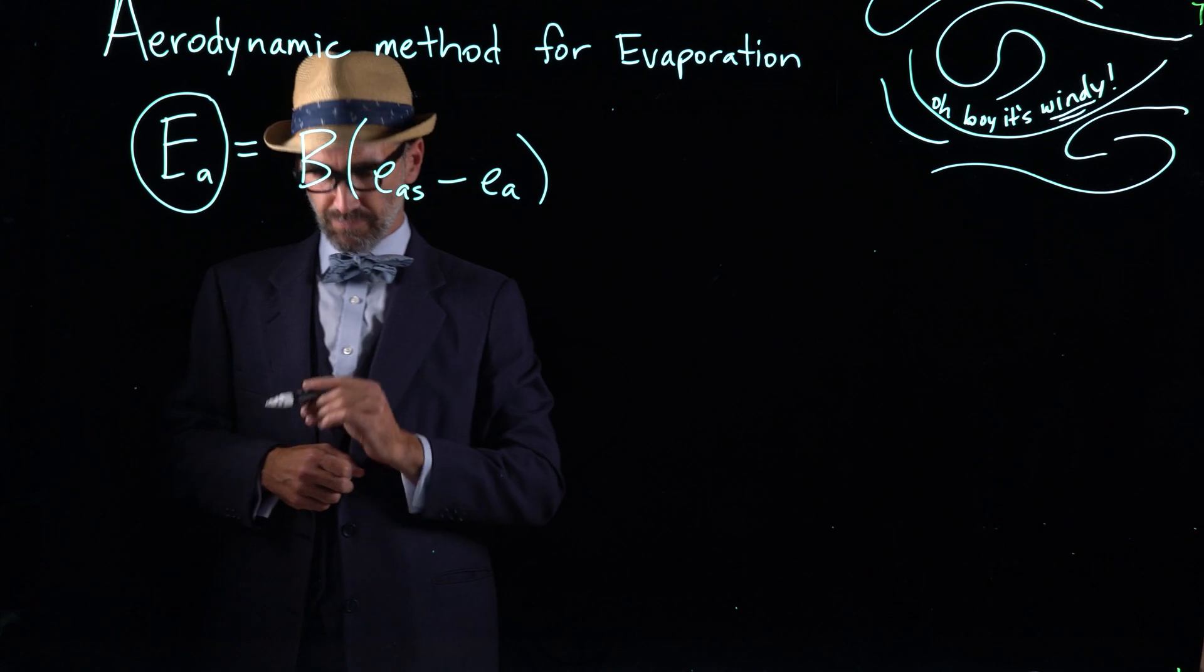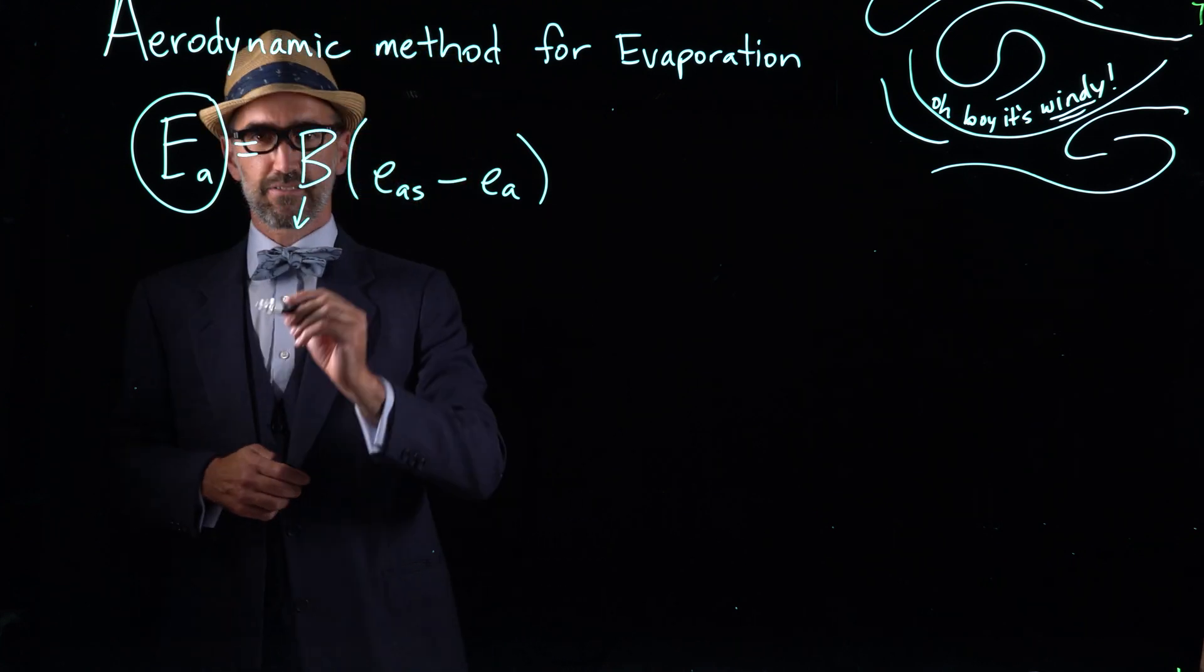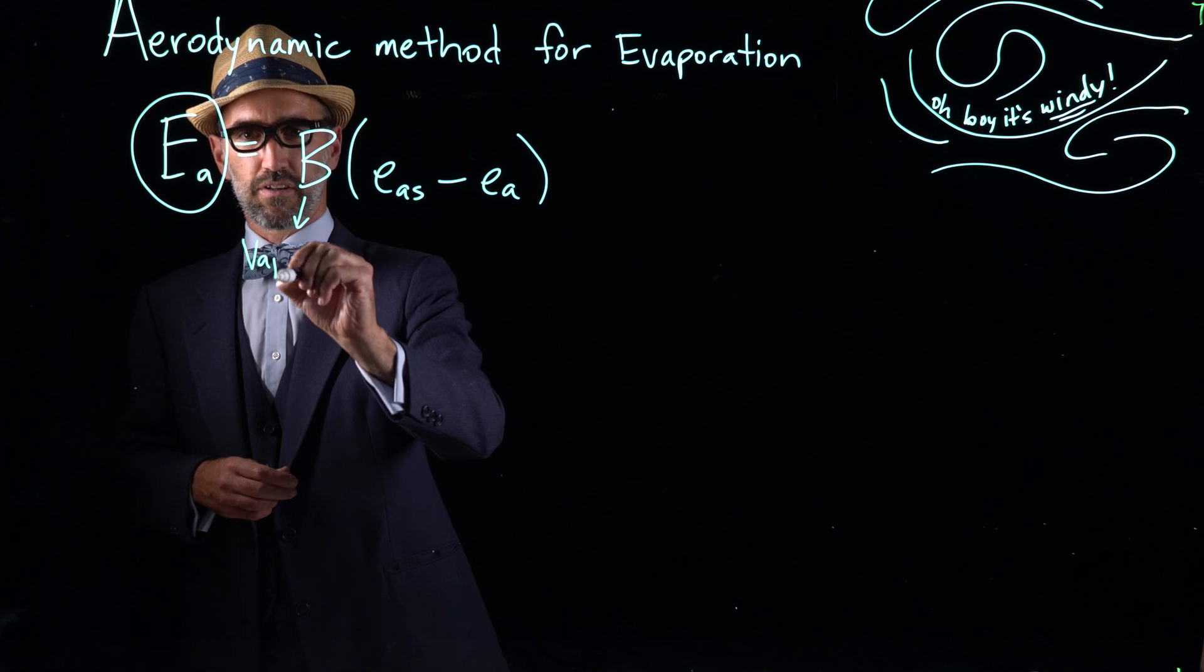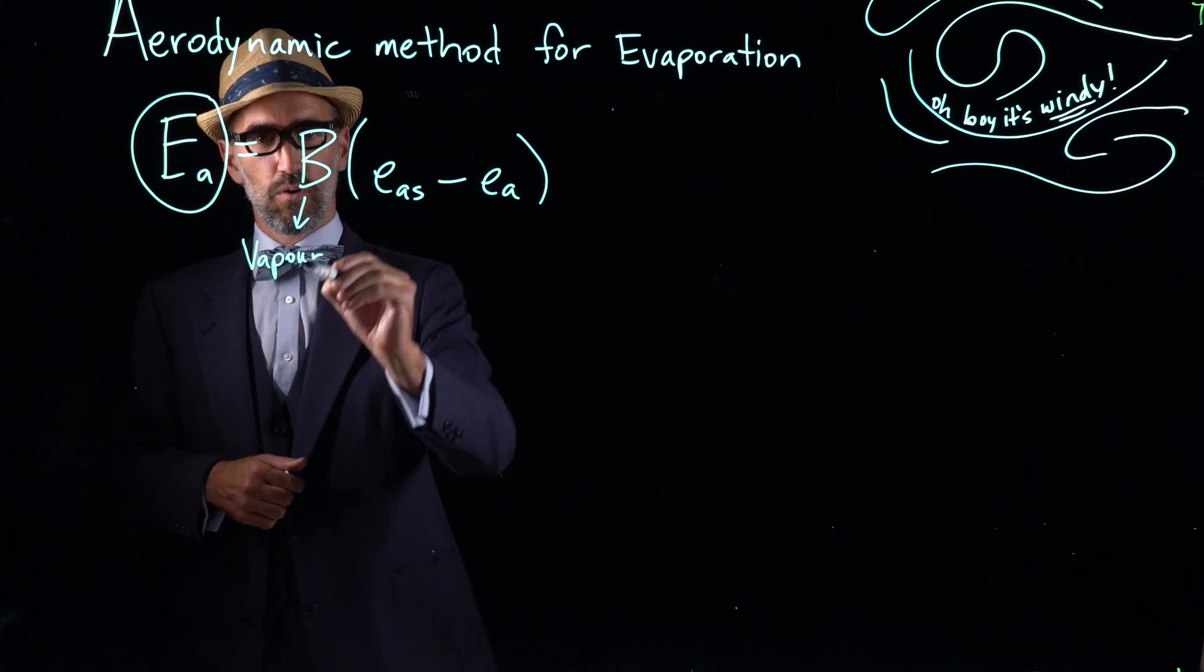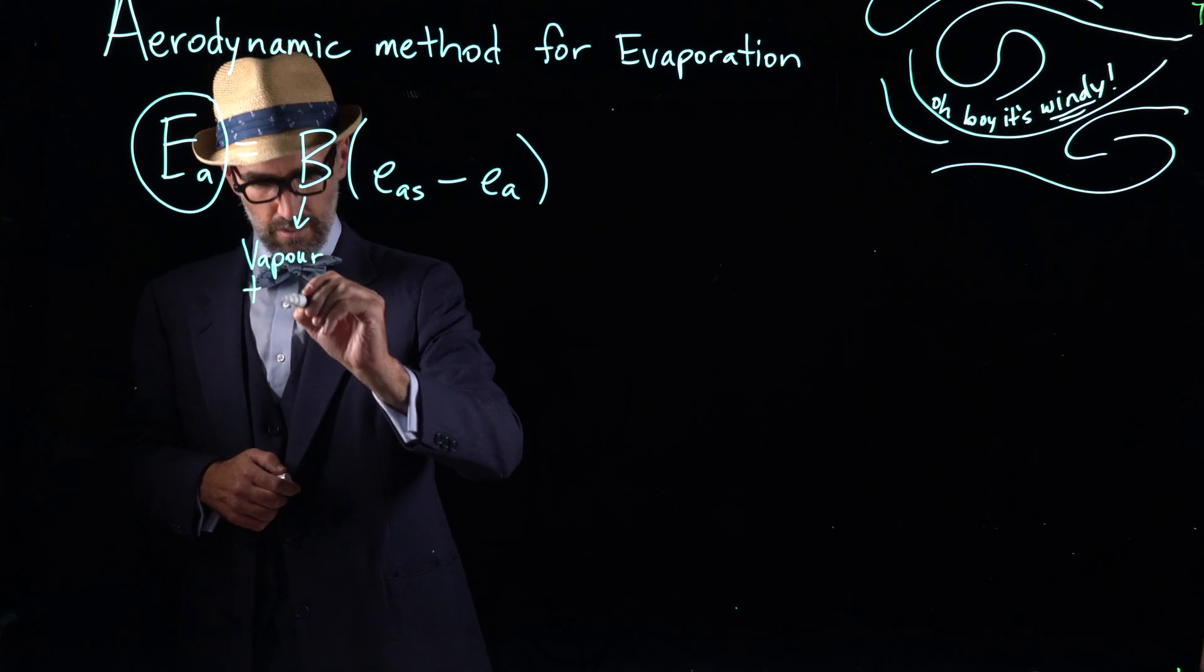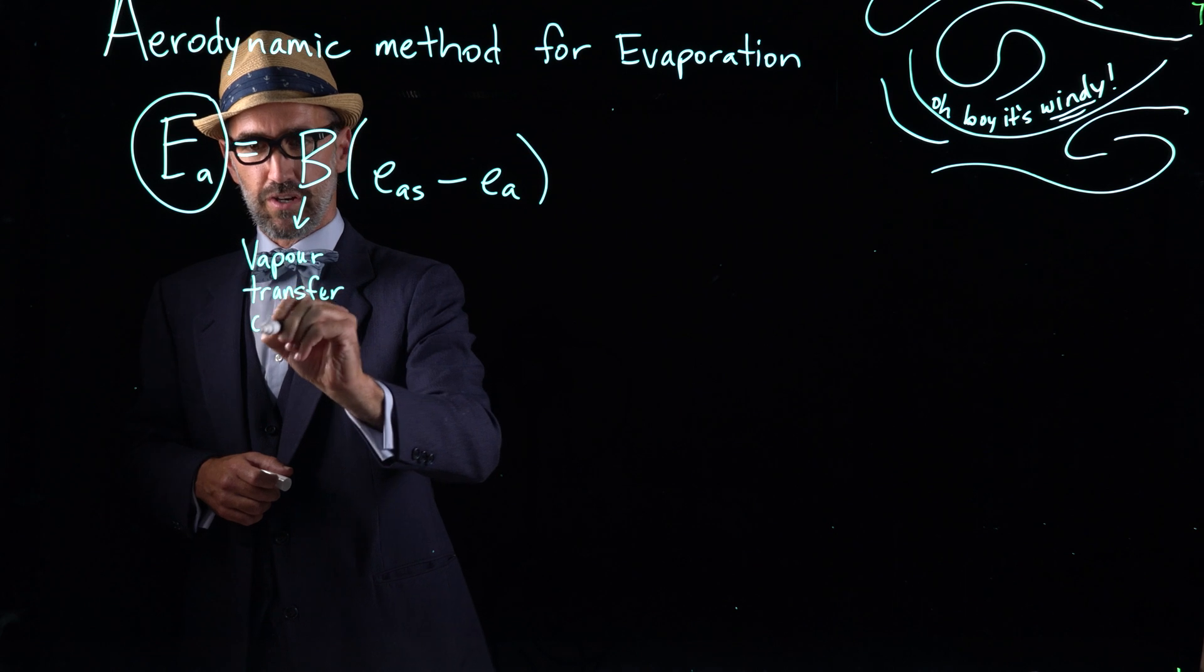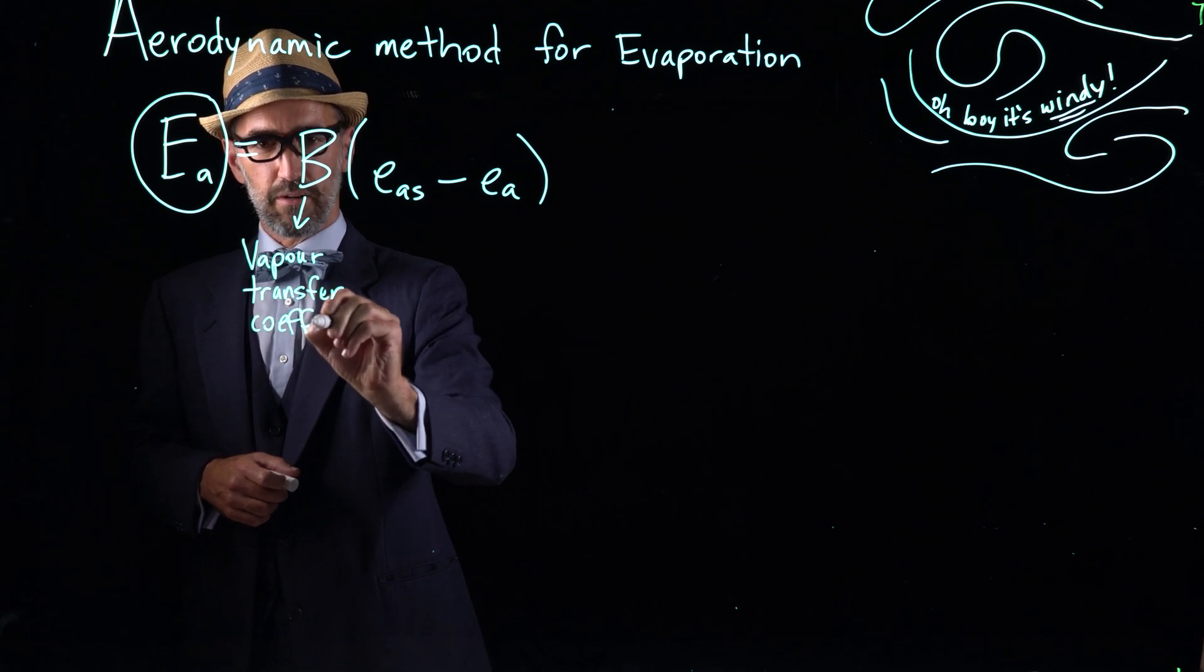B is the vapor transfer coefficient, so that's the coefficient of how easily vapor is transferred. So the vapor transfer coefficient, and we'll calculate that in a minute.